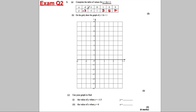Now plot on the graph: 2 back with 3 down. 1 back with 1 down. 0 across, 1 up. 1 across, 3 up. 2 across, 5 up. 3 across, 7 up. You've made a perfect straight line — draw that line through them.